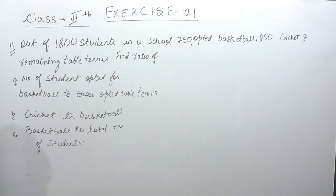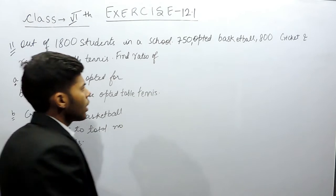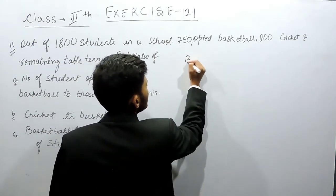In part B, the number of students who opted for cricket to the number of students who opted for basketball. And in part C, the number of students who opted for basketball to the number of total students.